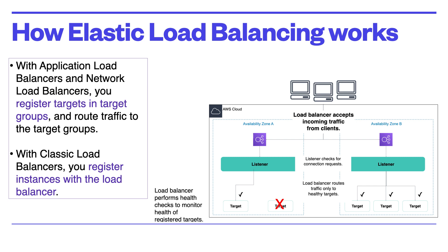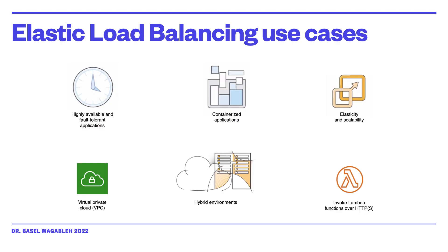The use cases for load balancing include achieving high availability and better fault tolerance for your application, automatically load balancing containerized applications, and automatically scaling your application. You can use Elastic Load Balancing in your virtual private cloud to enable hybrid load balancing across multiple AWS availability zones and on-premises data centers. You can also use it to invoke Lambda functions over HTTP or HTTPS, enabling users to access serverless applications from any HTTP client.